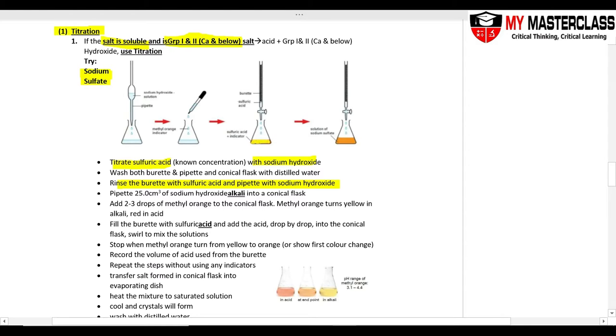What color change is your indicator? Please know this, you have to memorize this. Methyl orange turns yellow in alkali, red in acid, and your endpoint, the picture is here. After that, fill up the burette with the acid and then add it drop by drop into the conical flask while you swirl and mix. Stop when methyl orange turns from yellow to endpoint orange.